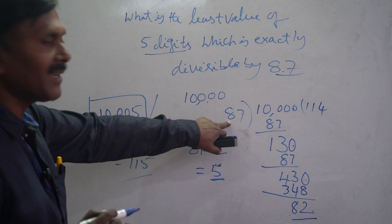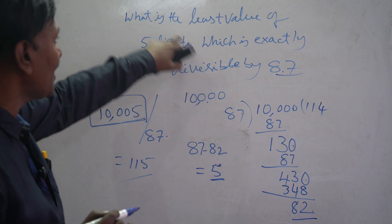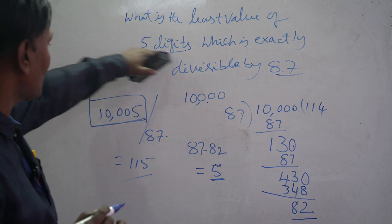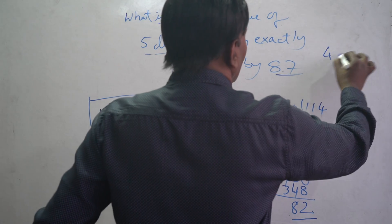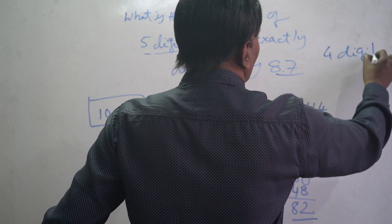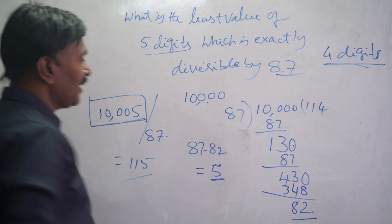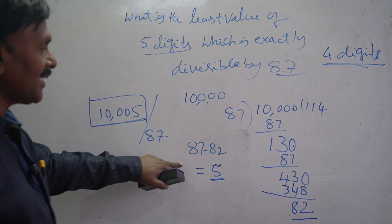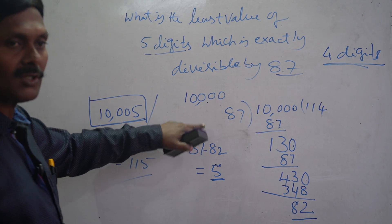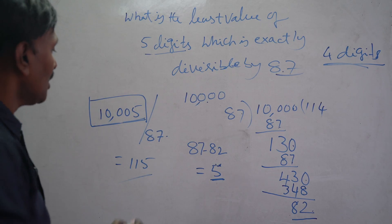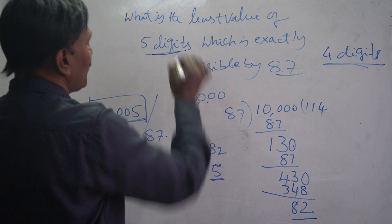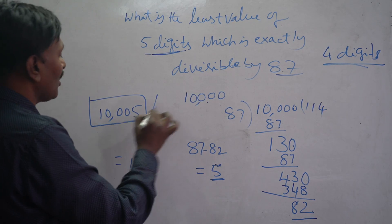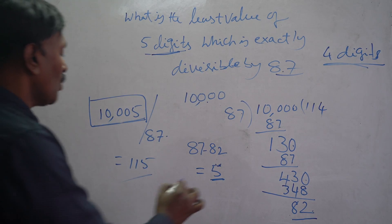Don't subtract. If you subtract 5, it's also divisible by 87, but our output should be a 5-digit number. If you subtract, it will become a 4-digit number, which means the output is wrong. You have to decide whether to add or subtract.